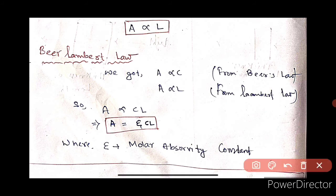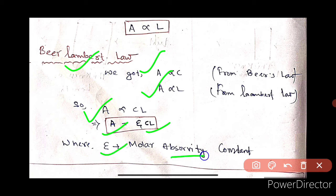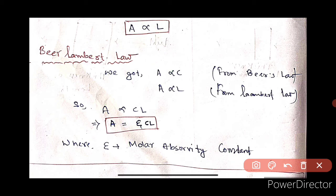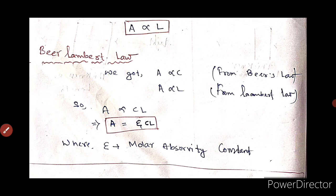Next, Beer's and Lambert's combined law. We can write A proportional to C, and A proportional to L. So we can write A proportional to CL, and therefore A is equal to epsilon times CL. Epsilon here is the absorptivity constant. It is a constant. So this is Beer's and Lambert's law.